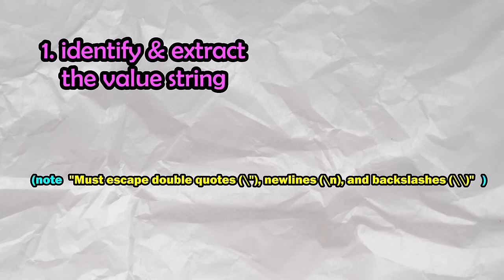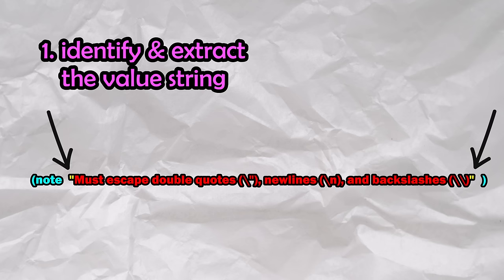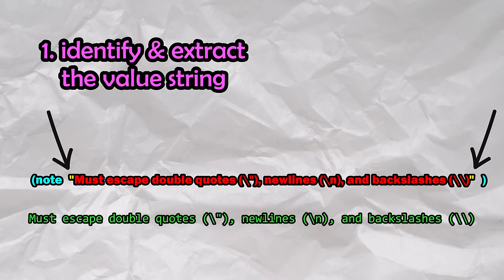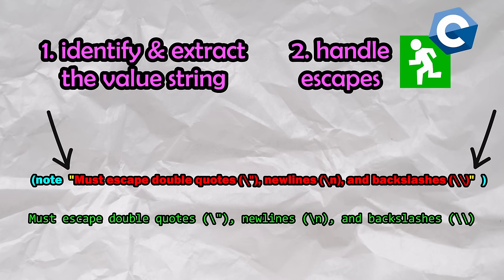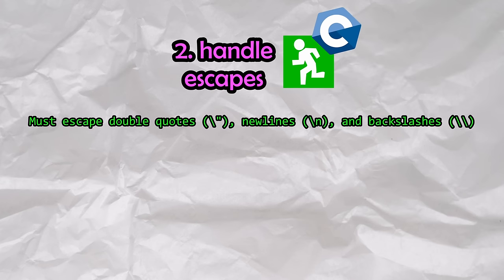EXIFTOOL parses metadata character by character. In terms of parsing the value, it has two main goals. First, it needs to identify the beginning and the end of the string, so that it knows what is included within the bounds of the value, denoted by the opening double quote and the closing double quote. Second, once this is done, the entire raw value will be successfully extracted and stored as a string. At this point, all C escape sequences will need to be handled. If we were to print out the contents of the string at this point, we would get the escape sequences stored as literal characters.